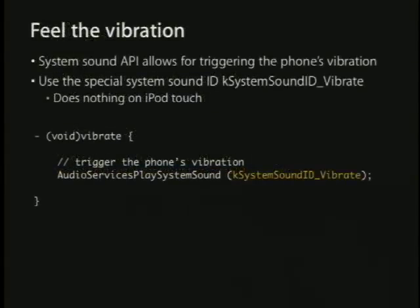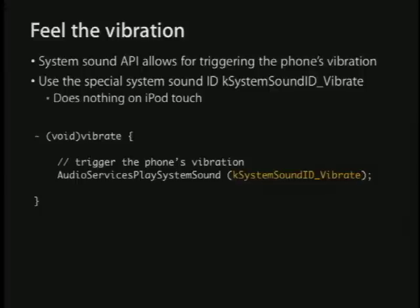This API also handles vibration. The vibrator has its own system sound ID — pass it to audio services play system sound and the phone vibrates for a fixed amount of time, maybe half a second. If you're making a game and want physical feedback when the player hits an enemy, this is how you do it.